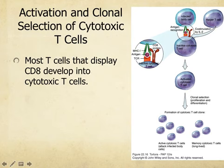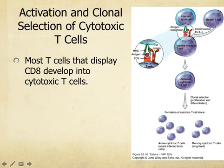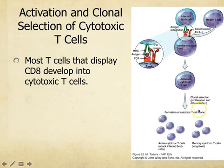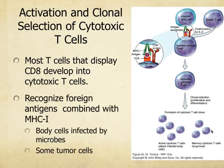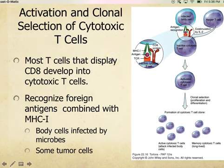This co-stimulation is thought to be necessary to prevent accidental immune responses, because autoimmune disorders can be very deadly. The key co-stimulating cytokine here is IL-2, or interleukin-2. Once the cytotoxic T cell is activated, it will proliferate and differentiate — dividing many times into the active form and the memory form, which is the reserve form in case whatever it was tries to infect you a second time.